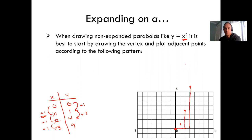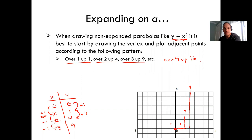How far up you go is always the square of how far to the right you went — and it doesn't matter if you go left, because negative 1 squared is still 1. So the pattern is: over 1 up 1, over 2 up 4, over 3 up 9, over 4 up 16, and so on. That's how a normal parabola gets drawn. Connect these points together and you get a nice parabola. Please draw your parabolas relatively accurately.